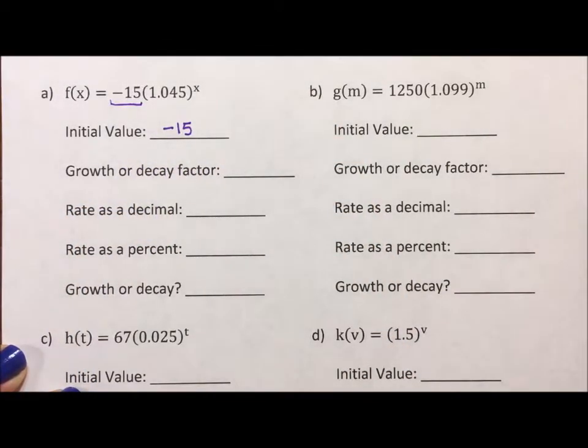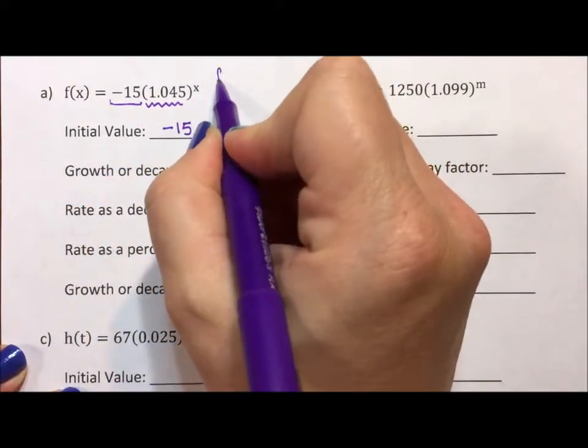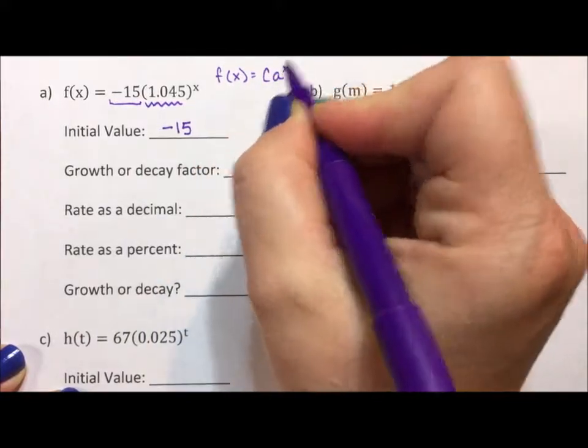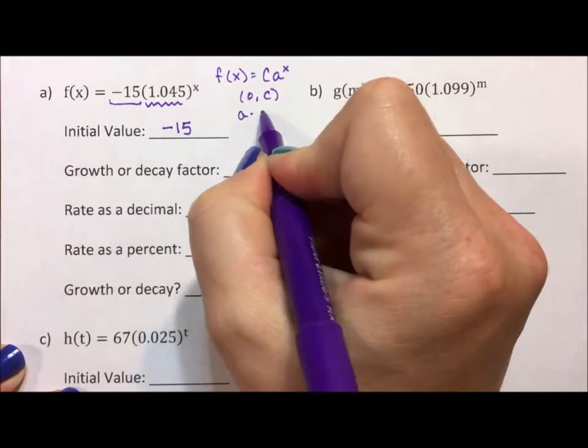Now it says, what is the growth or decay factor? This is your factor. When you have an exponential function, f of x equals c times a to the x, c is your initial, 0c is where you start on the graph, and a is your factor.